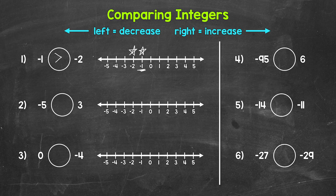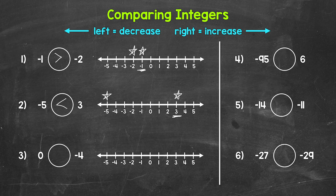Moving on to number two, we have: negative five is greater than, less than, or equal to three. Let's take a look at the number line. Three is right here and negative five is right here. Which is further to the right? Three. Three is greater than negative five, so reading this from left to right, negative five is less than three. With number two, we have a negative and a positive — whenever we have a negative and a positive, the positive is always going to be greater. Relating this to temperature: three degrees is warmer than negative five degrees.